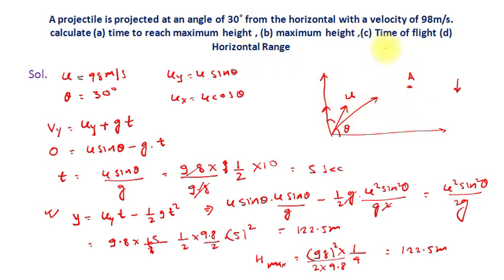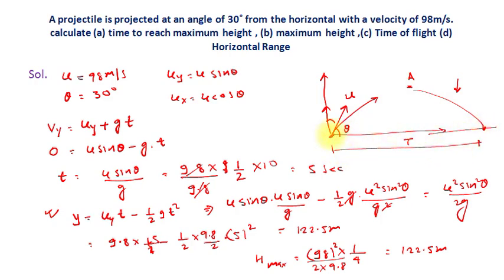For part C, time of flight. Time of flight is the total time for the projectile to travel from one y-coordinate back to the same y-coordinate — from 0 to 0. At T = 0 the vertical distance is 0, and after the time of flight T, the y-coordinate is again 0. Putting Y = 0 gives us the time of flight.